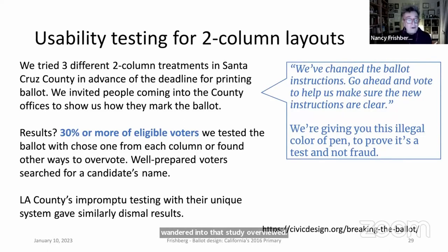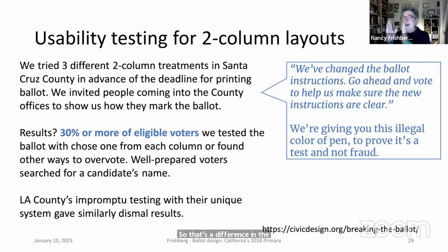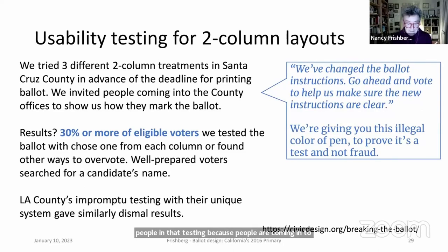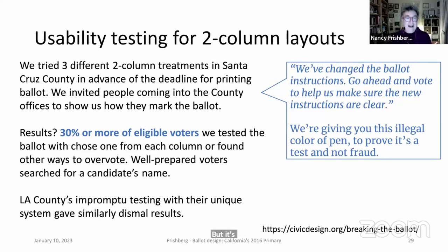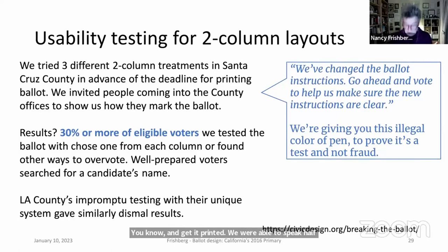Results differed between voters who were searching for a specific candidate and newer or occasional voters. The study captured a wide range — new voters, not-yet voters, sometime voters, and regular voters — all coming in to pay taxes or get building permits. This is an argument in favor of usability testing even when time is tight. LA County also did impromptu testing with their new multi-card system and found similarly high overvote rates.